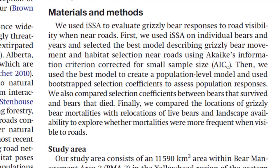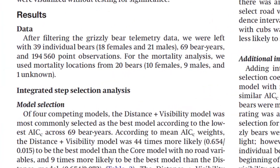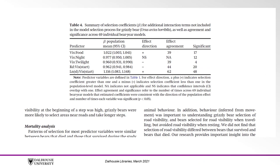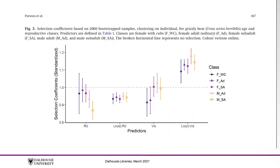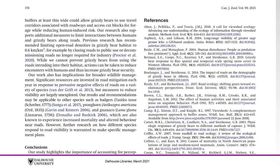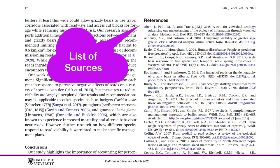The methods section comes next and it describes how the research was conducted. The results section summarizes the findings from the study and often includes tables, graphs, or figures. The discussion section describes the implications of these results. Finally, the references section provides a list of sources cited in the document.